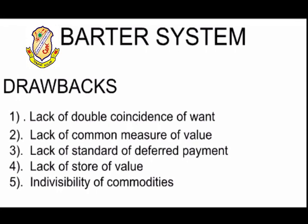Two people must be ready to exchange their goods for another good, or their service for another good. If these two people are not agreeing to exchange their goods with each other, then that is the drawback of barter system called double coincidence — the coincidence must be from both sides. This is the first drawback.